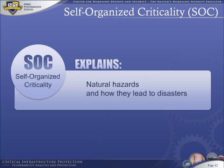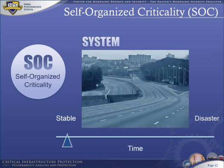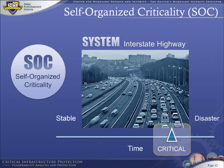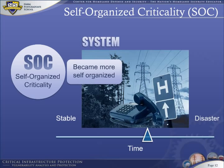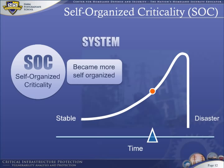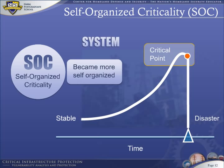Nearly all systems in nature and the human-made world of infrastructure start out as stable systems. The interstate highway system was initially stable because density of automobiles takes time to build up, until today's freeways are critical. Power grids were initially stable, but over time they become more and more self-organized. Same thing for forests, telecommunication systems, and hospital systems. As these systems become self-organized, they approach a tipping point called the critical point. Once the critical point is reached, it takes only a very minor accident to push the system over the top. The financial system collapse of 2008 is a dramatic recent example.